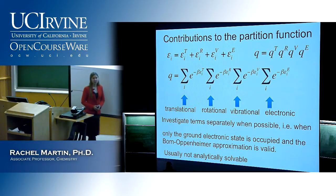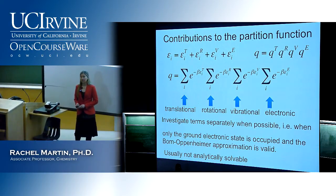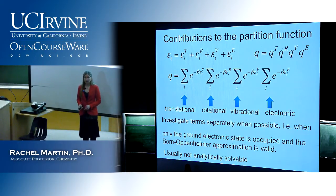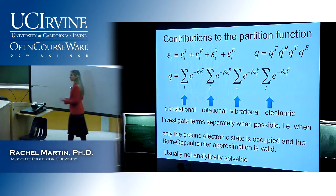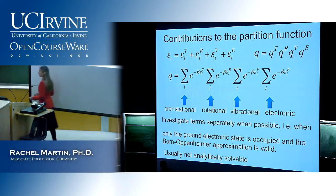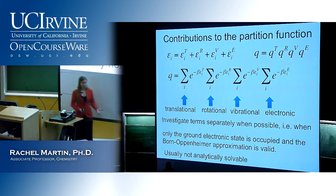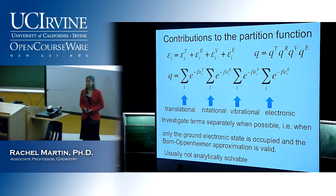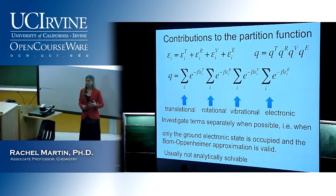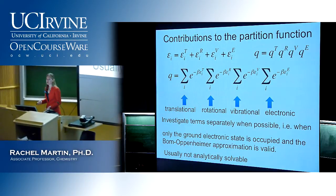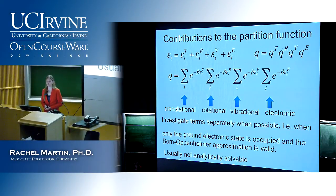The examples we'll do in class involve approximations we can make. If you get into doing statistical mechanics in grad school, one of the things you'll see is that when you get into more advanced problems, there's always some little trick that enables you to make some approximation. There's either some clever approximation you can make, or you just brute-force it with numerical methods.